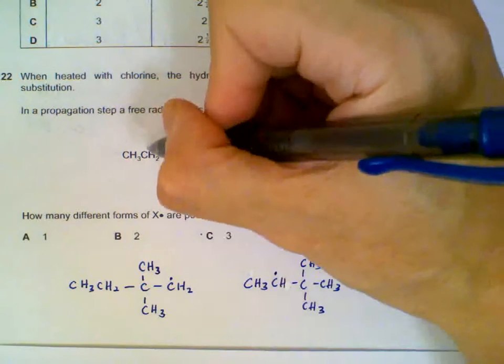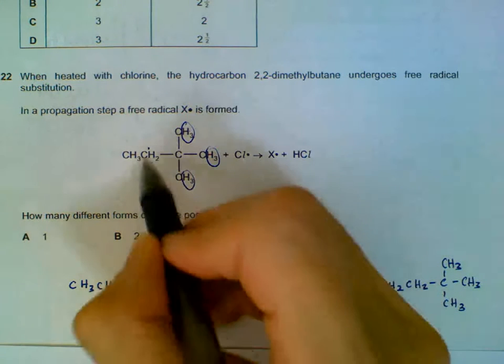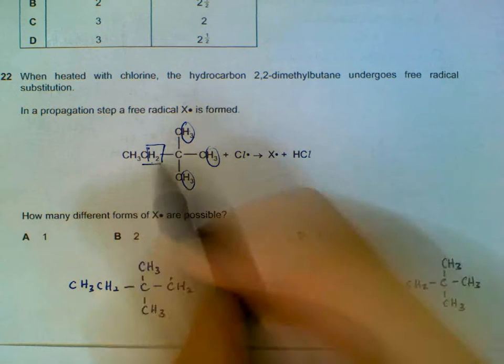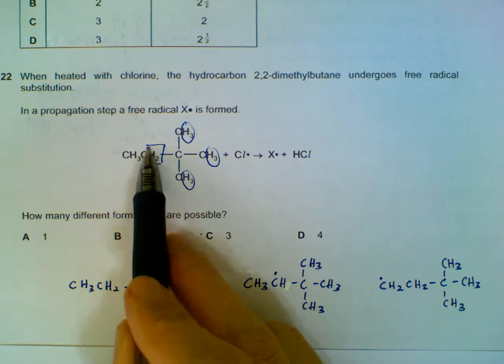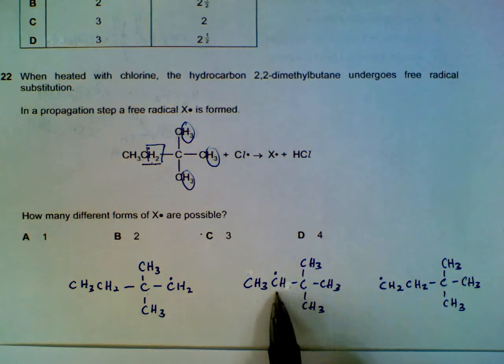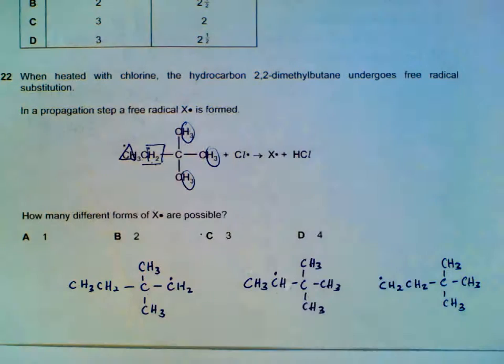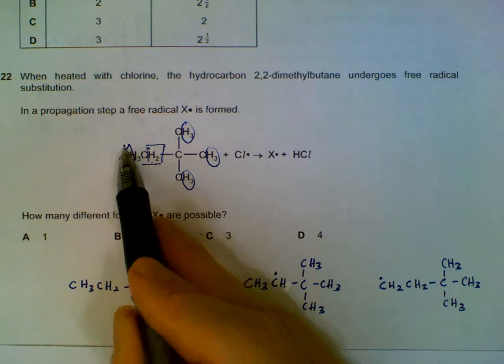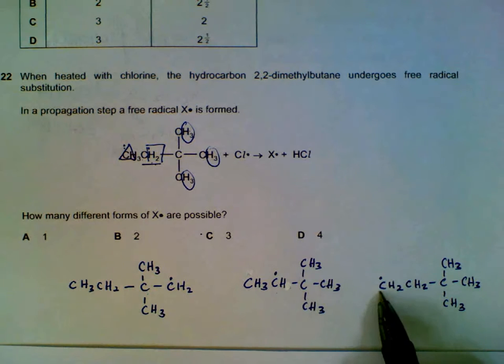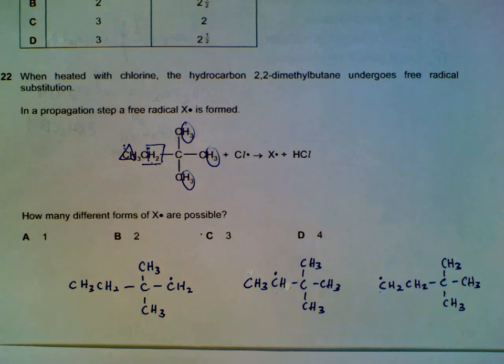If we were to remove the hydrogen from this carbon, the unpaired electron will be found on this carbon instead and we will get this radical. Finally, if you are removing the hydrogen from this carbon, the unpaired electron will be here, we will end up with this radical. So there are three possible unique radicals that we can find.